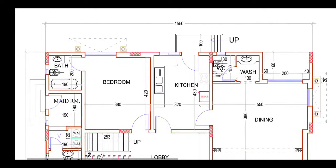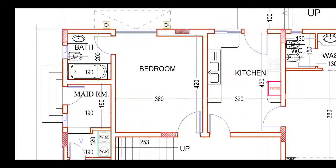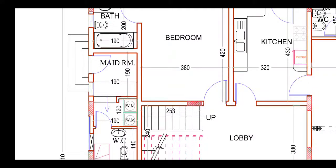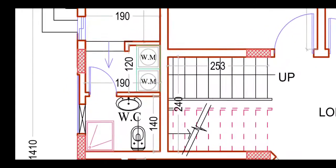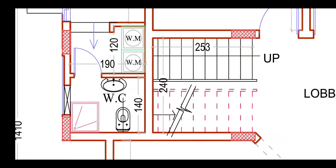If we come here we see this is our bedroom, 380 by 420 centimeters. For the kitchen area we have given a servant room, 190 by 190 centimeters, with an attached water closet and wash area. We also have a washing machine room, 190 by 120 centimeters, and a water closet, 140 by 190 centimeters.